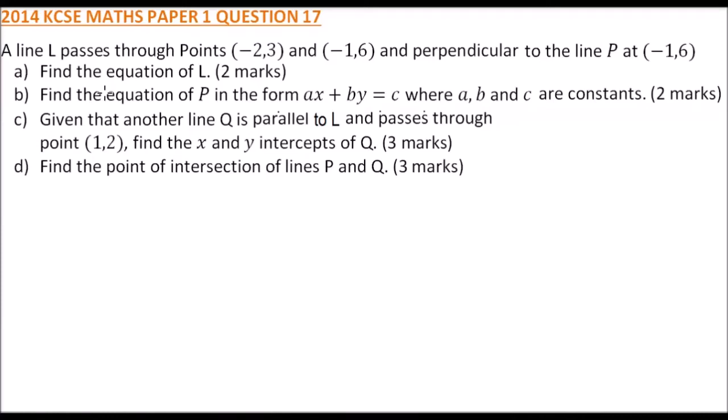2014 paper 1 question 17. We are told a line passes through points minus 2, 3 and minus 1, 6, and perpendicular to the line p at minus 1, 6. Find the equation of l. So this is part a — equation of l. First of all we calculate the gradient.